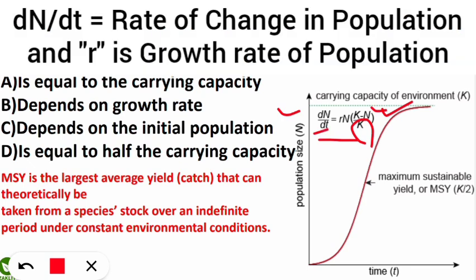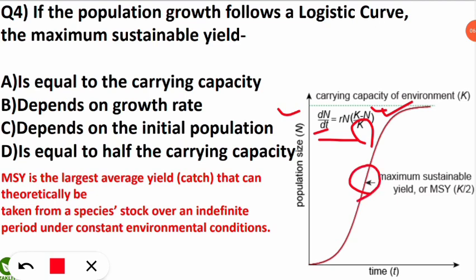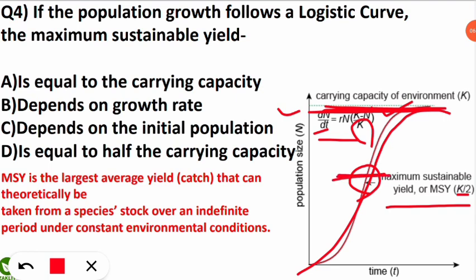In this graph, you can see the position where the maximum sustainable yield is formed, which is at half the carrying capacity. The carrying capacity is the topmost point, and half of that gives the maximum sustainable yield. So K/2 will give the maximum sustainable yield — that is, half the carrying capacity.